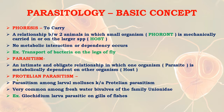Protalian parasitism is parasitism among larval mollusks. It is very common among fresh water bivalves of the family Lamellidens. An example is the glochidium larva, which is parasitic on the gills of fishes.